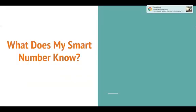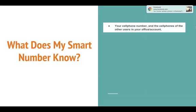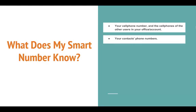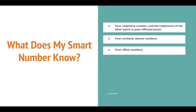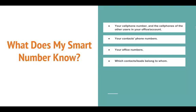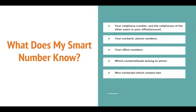What does your smart number know? Your smart number knows your cell phone number and the cell phones of the other users in your office or your account. Your smart number knows your contacts' phone numbers that are in your smart CRM database. Your smart number knows your office numbers. It knows which contacts and leads belong to whom — there's only one lead per agent — and your smart number knows who has spoken with that lead last, and who contacted which contact last.